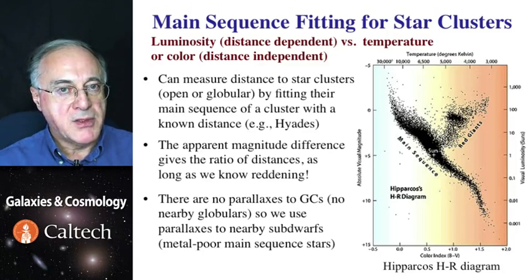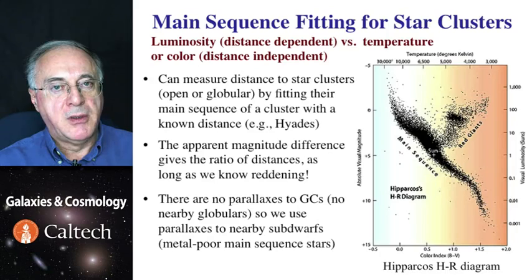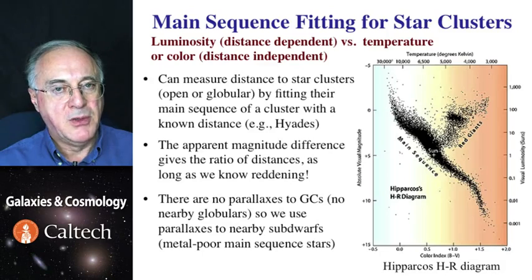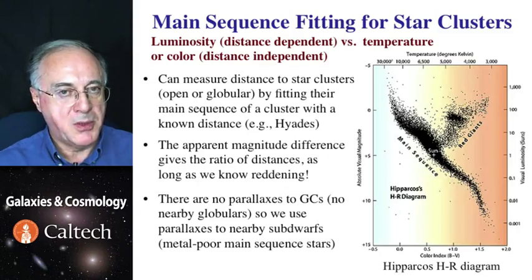In a given cluster you may have thousands of stars, and therefore you can determine very precisely the distance to the cluster itself. This works fairly well for young stellar clusters in the galactic disk. However, no globular cluster is yet close enough to measure parallax to it. There, what we do is we use field stars of the same type as those that live in globular clusters — the population 2 stars.